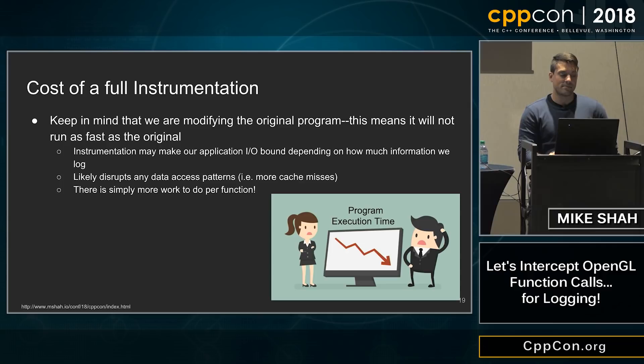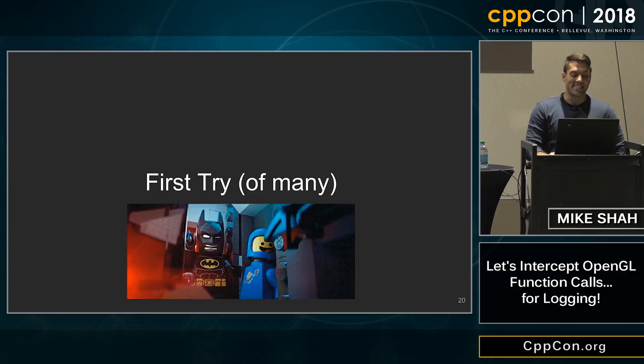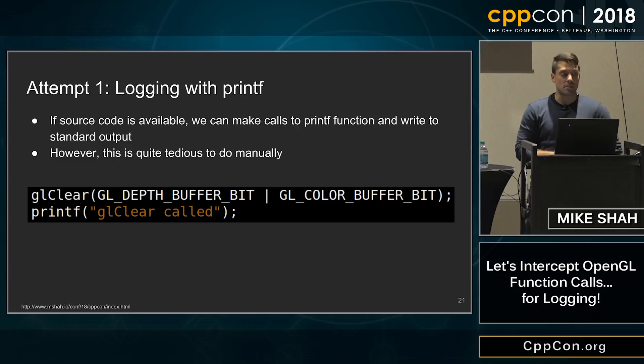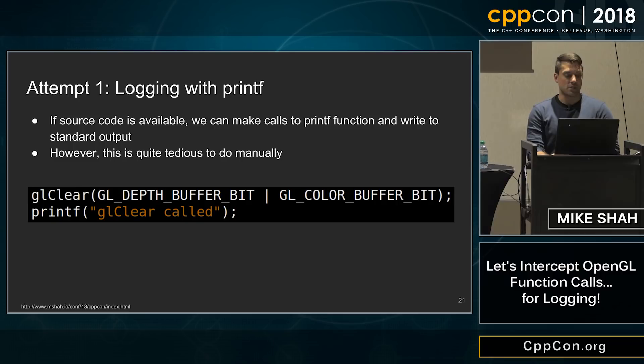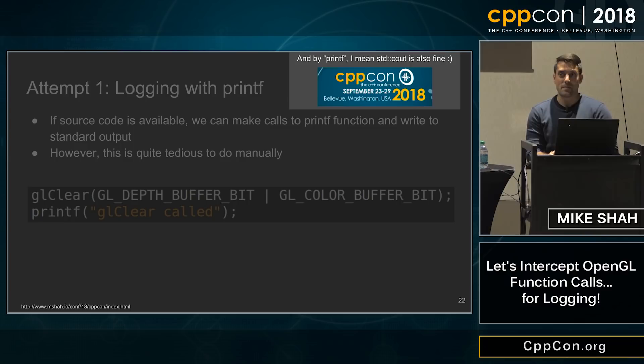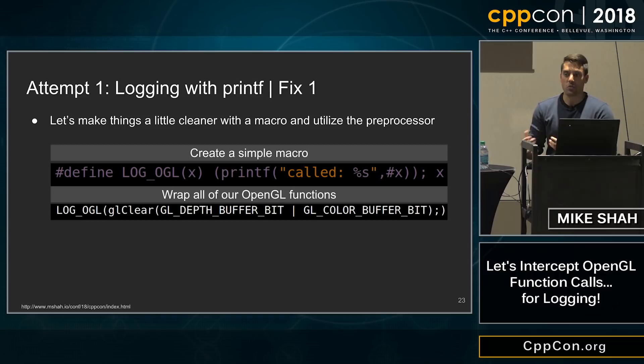So our first try is the old trusty logging with printf. The source is available — just insert some printfs in there, and that'll do the trick. We'll be able to see that gl_clear was called, and we proceed forward. Of course, this is quite tedious to do manually. And for this audience — cout, not printf. We're at CppCon.